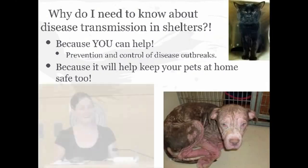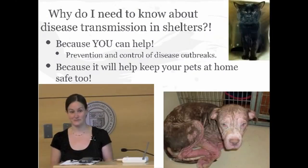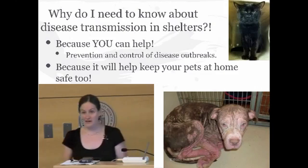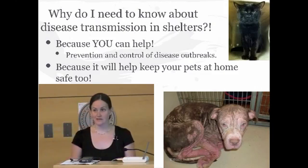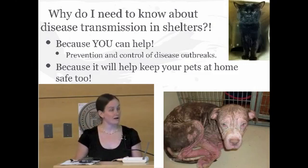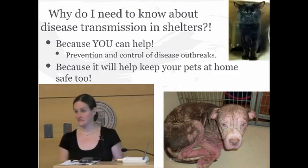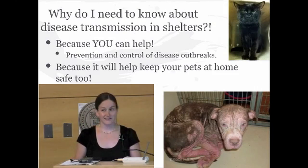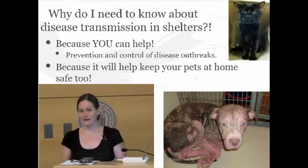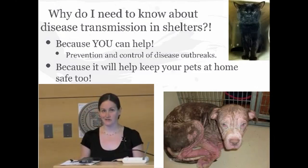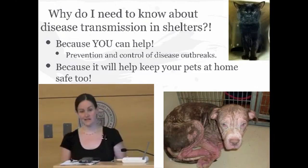So why do you need to know about disease transmission in the shelter environment? By knowing about the different ways in which diseases can be transmitted, you can better understand the protocols that shelter management put in place. You can also help to prevent disease outbreaks because you play a very critical role. And lastly, many of you as volunteers and staff have your own pets at home — by knowing the different ways diseases can be transmitted, you can keep your pets safe at home as well.